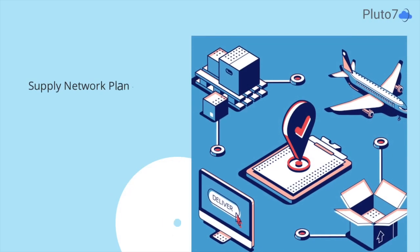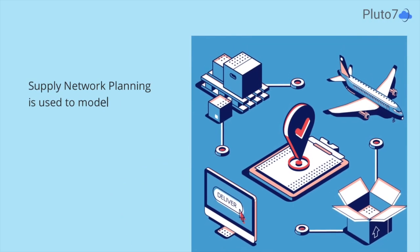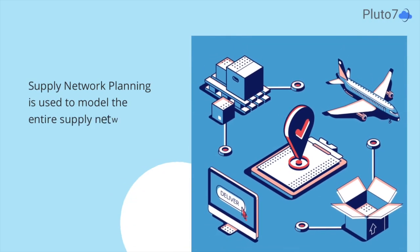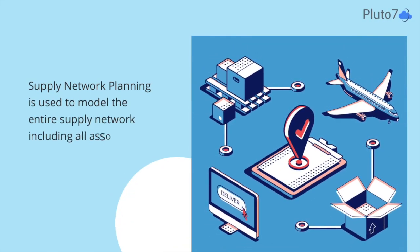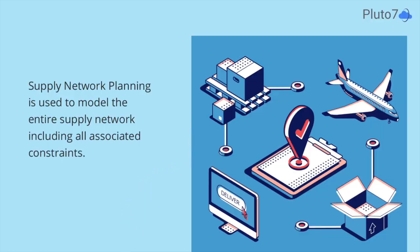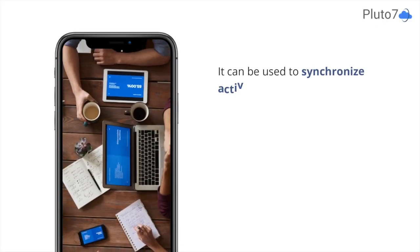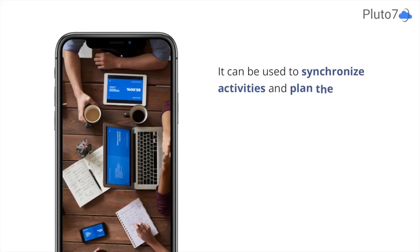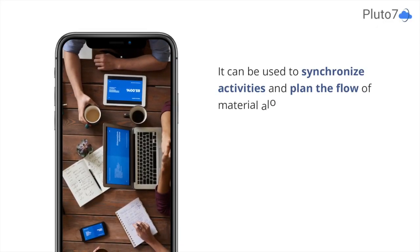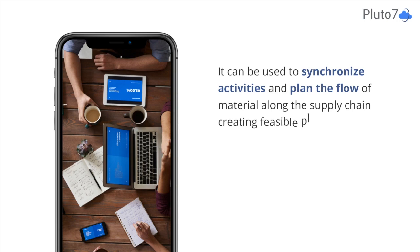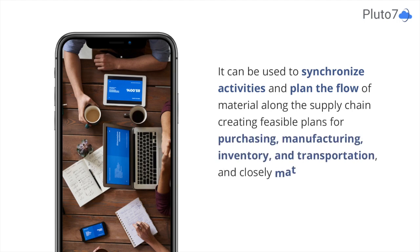Supply network planning is used to model the entire supply network, including all associated constraints. It can be used to synchronize activities and plan the flow of materials along the supply chain, creating feasible plans for purchasing, manufacturing, inventory, and transportation, and to closely match supply and demand.